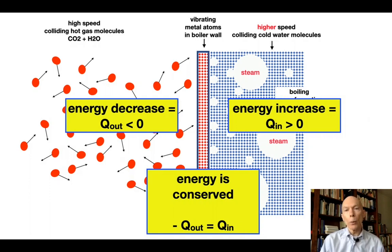We say that the energy increase of the water is Q in. Energy is being received by the water. And that's greater than zero. It's a positive number. And then when we say energy is conserved, we say that the absolute value of Q out and Q in are identical. And that's fine.